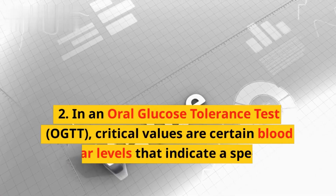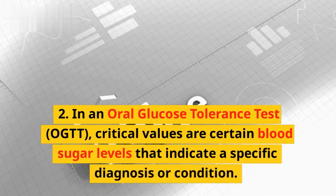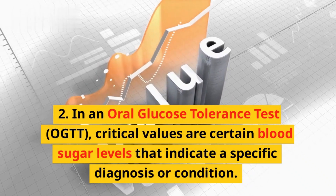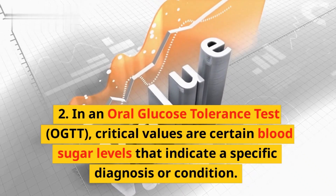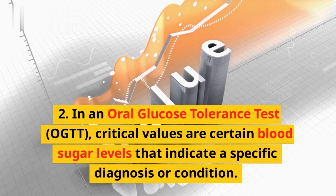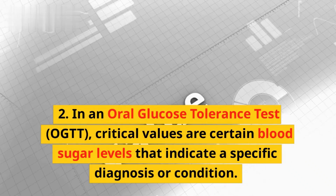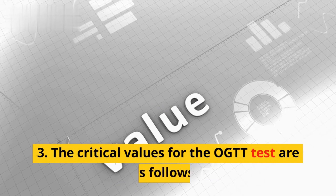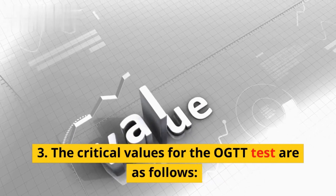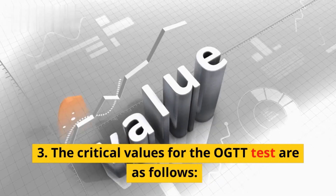In an Oral Glucose Tolerance Test, OGTT, critical values are certain blood sugar levels that indicate a specific diagnosis or condition. The critical values for the OGTT test are as follows.